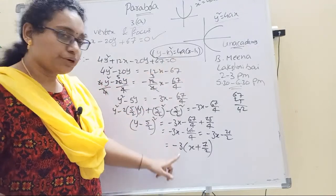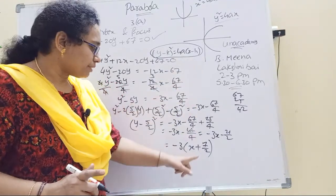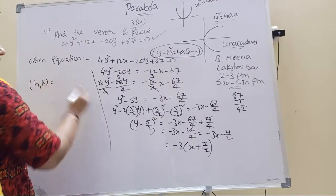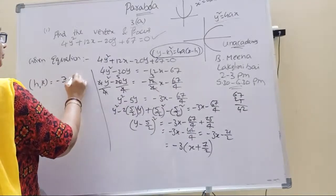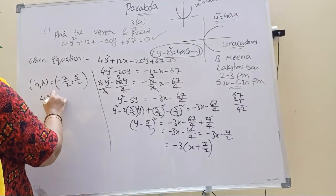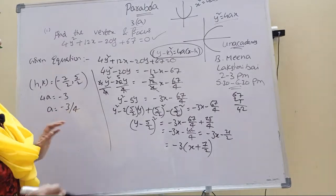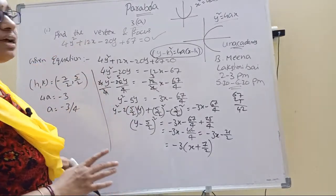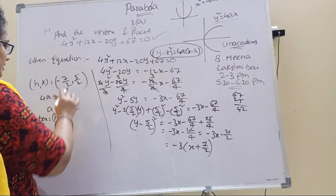Now we can see k is 5 by 2, 4a is equal to minus 3, h is minus 7 by 2. Why? Because x minus h, x plus is there, that's why we get minus 7 by 2. So h, k is minus 7 by 2, 5 by 2. Then 4a equals minus 3, so a equals minus 3 by 4. Question asks for vertex. Vertex formula is h, k.